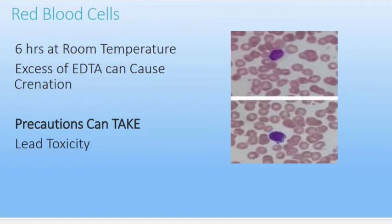These findings underline the importance of making films as soon as possible after blood withdrawal. A delay of up to one, two, or three hours is certainly permissible for red blood cells. Where possible, the practice of making films from blood before it is added to an anticoagulant is recommended, especially when screening for lead toxicity, as punctate basophilia may be seen less obviously in anticoagulated blood.